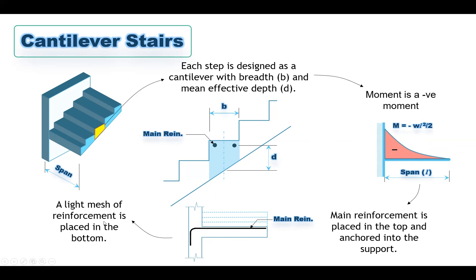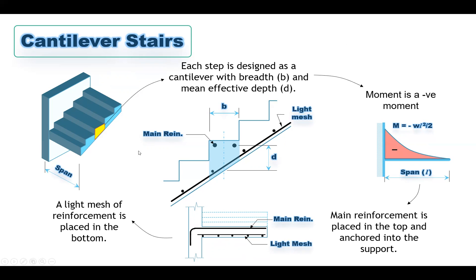For the other reinforcement, a light mesh of reinforcement is placed at the bottom. We use minimum steel reinforcement here. It will look like longitudinal reinforcement combined with transverse reinforcement in a light mesh. This is the first type of stairs supported in the transverse direction — the cantilever stair.